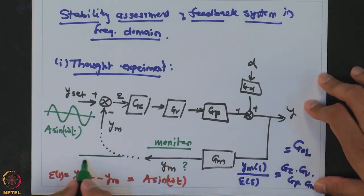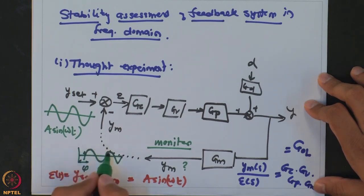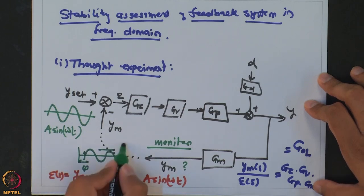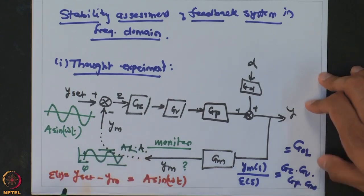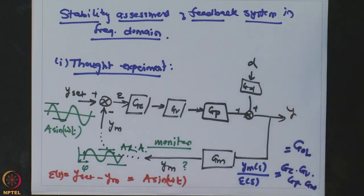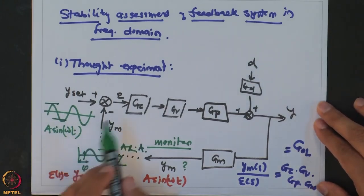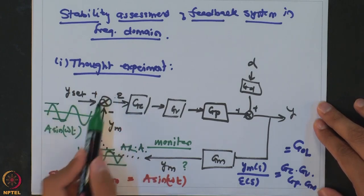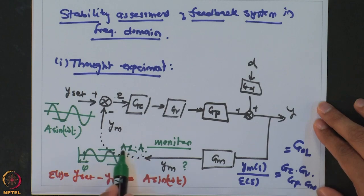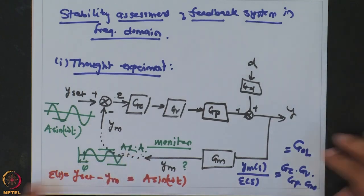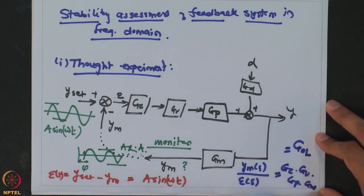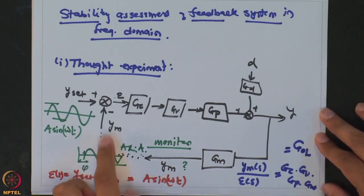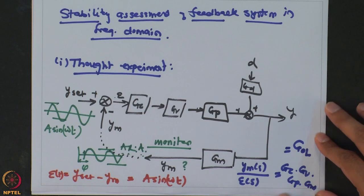We give a sinusoidal input as Y_set equal to ε, because YM is 0. As the signal passes through the four transfer functions, the output YM will again be a sinusoid with a certain phase and amplitude ratio. It will have amplitude ratio × A. The AR and φ are obtained using the frequency response of the open loop transfer function — the product of those four transfer functions — and depending on frequency, the phase and amplitude ratio change.